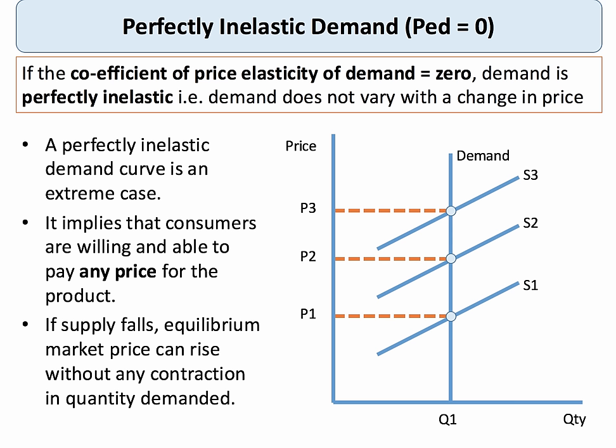Here's an extreme example: a vertical demand curve with a coefficient of price elasticity equal to zero. Demand does not change at all if there's a change in price. Effectively, consumers are willing or able to pay any price for the right to consume the product. Just by lifting the price from P1 to P2 to P3, the business can increase their total revenue.